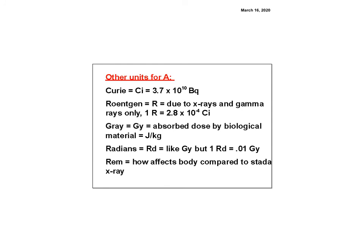Other units for activity: the curie, named after Madame Curie, equals 3.7 times 10 to the 10th becquerels. Roentgens measure exposure from X-rays and gamma rays only. Grays measure energy absorbed by biological material in joules per kilogram — used to assess radiation from nuclear events. Rems measure how radiation affects the body compared to a standard X-ray. Workers near radioactive material wear badges tracking their rem exposure; too many rems means removal from the area.